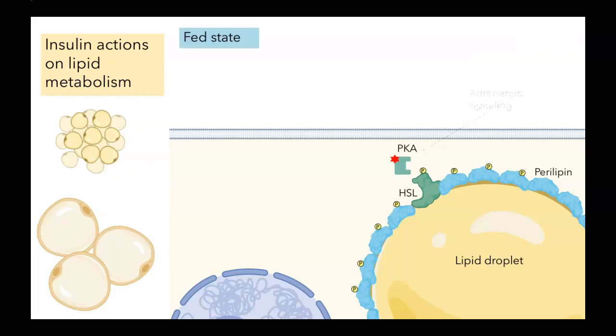In the fed state, insulin will reverse this process. So the addition of insulin leads to activation of a phosphodiesterase, and that can switch the PKA back into the inactive state, blocking the activity of HSL and blocking the breakdown of lipids.